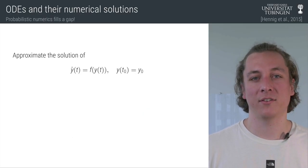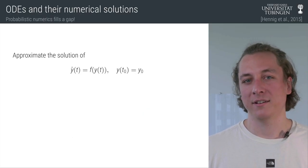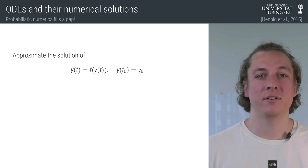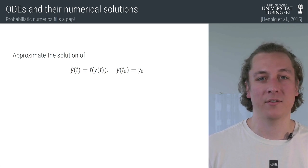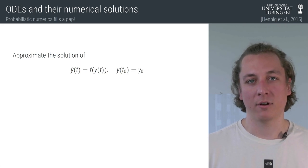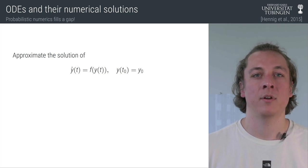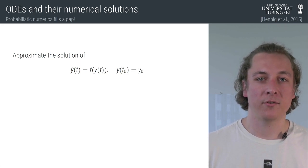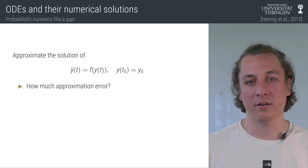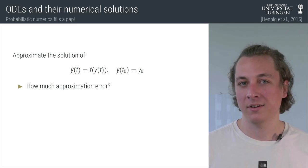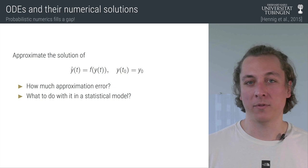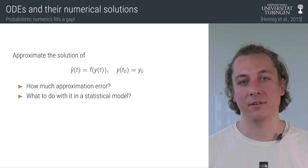But first, recall the setup. The task is to solve an ODE which, since in most interesting applications has a non-linear vector field F, needs to be done with a numerical algorithm. This raises two questions: first, how much error does this algorithm introduce? And second, how well does this algorithm interact with other pieces of a statistical model?